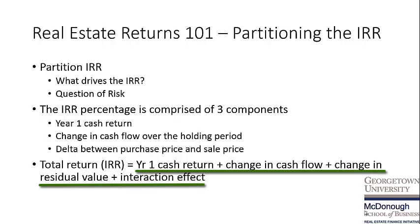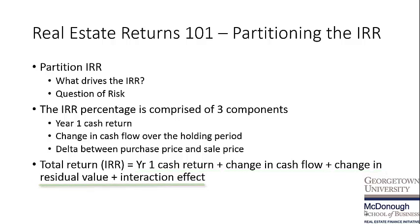The first component is your year one cash return. The second is your change in cash flow over the holding period. The third is the delta between the purchase price and the sales price. And there is a fourth interaction effect, which is not a material effect, at least in this example.